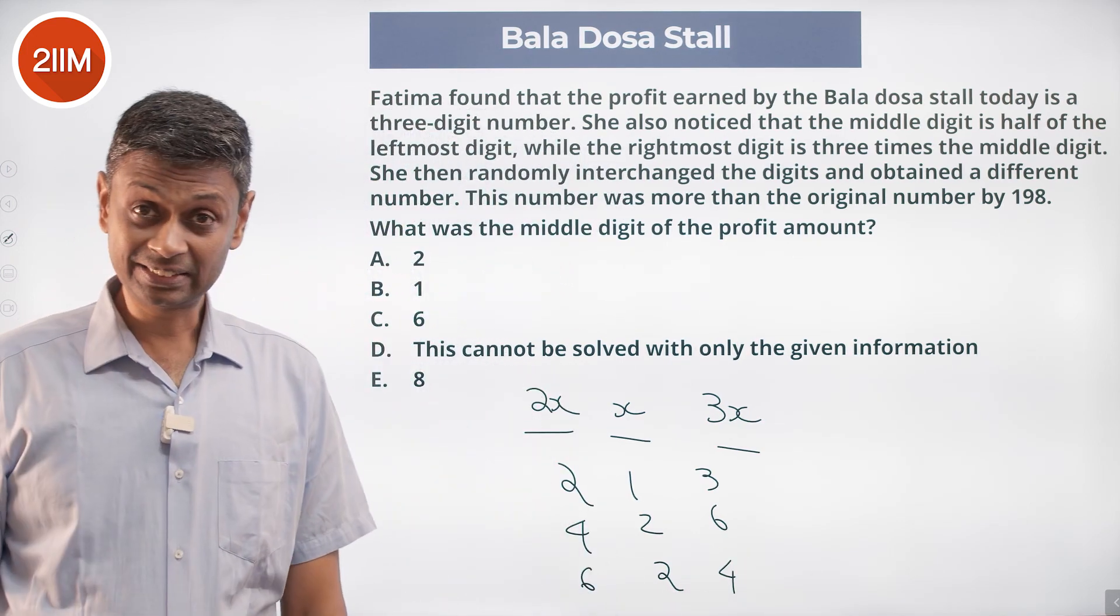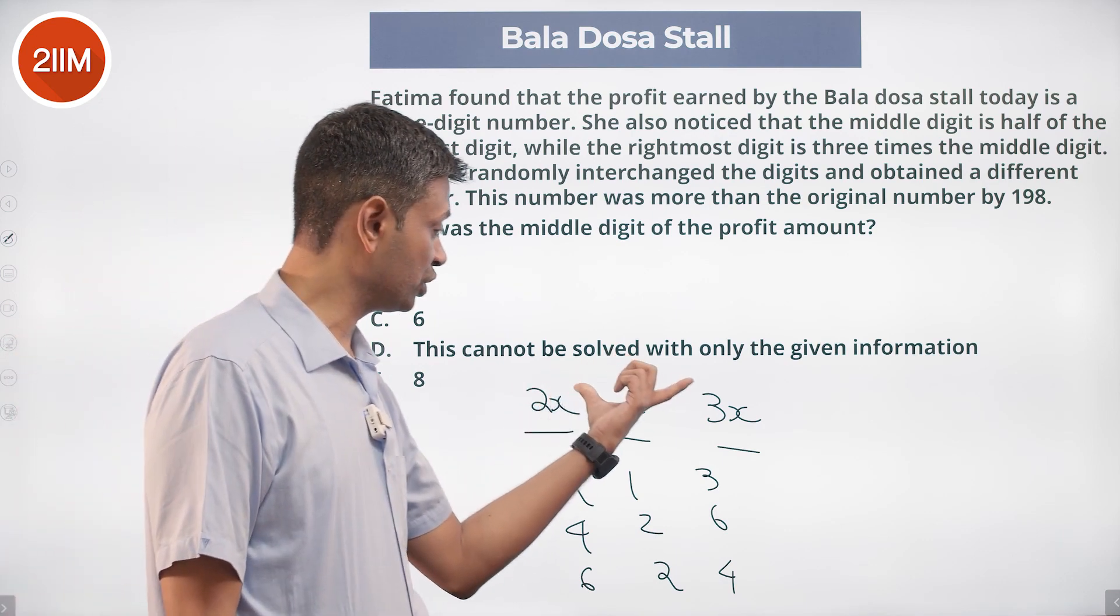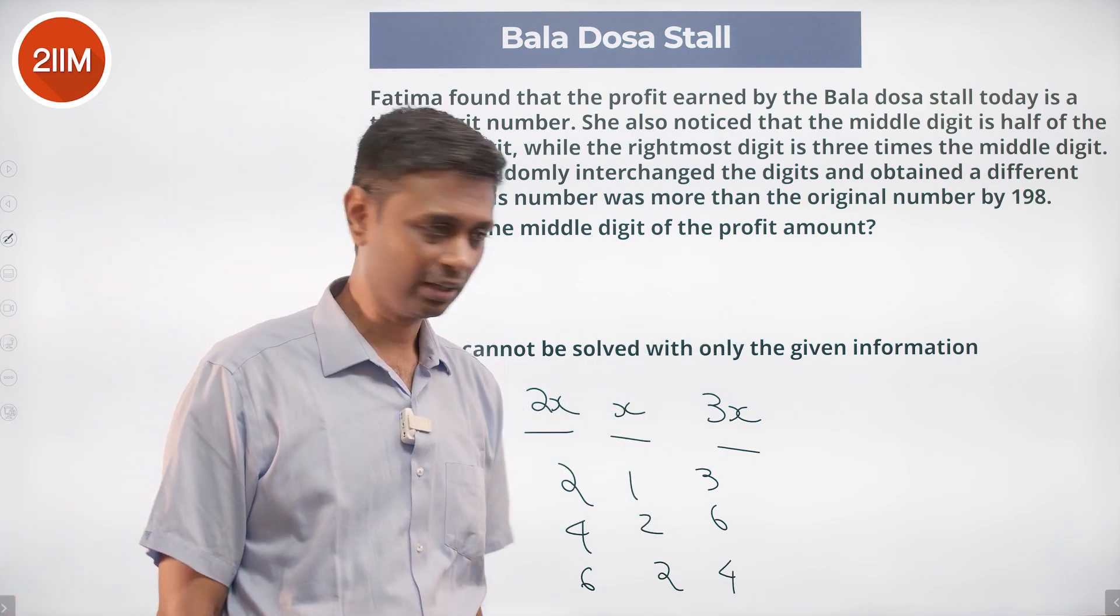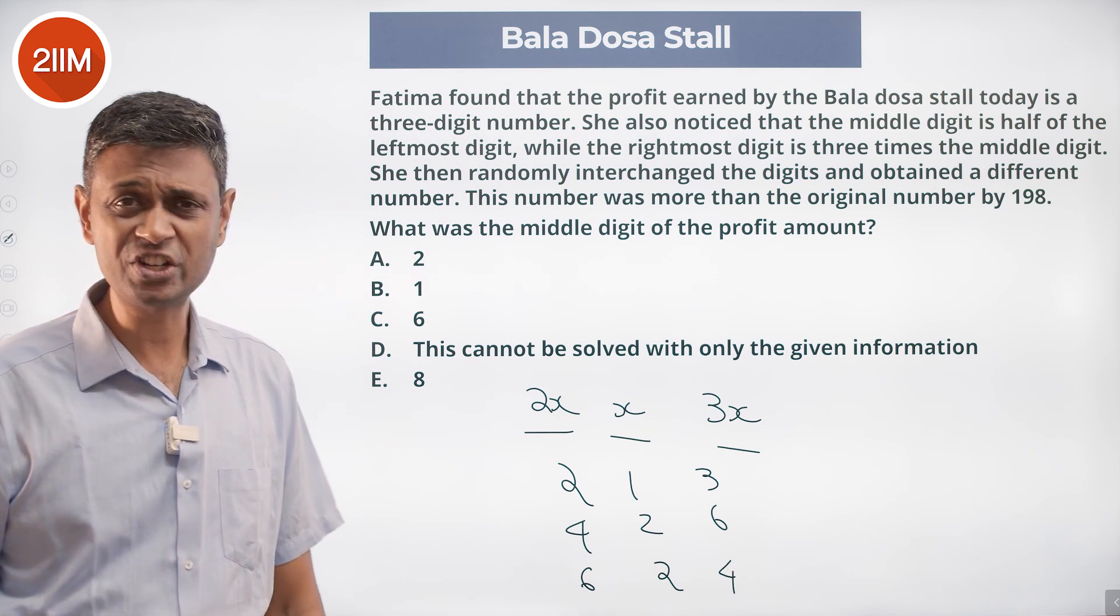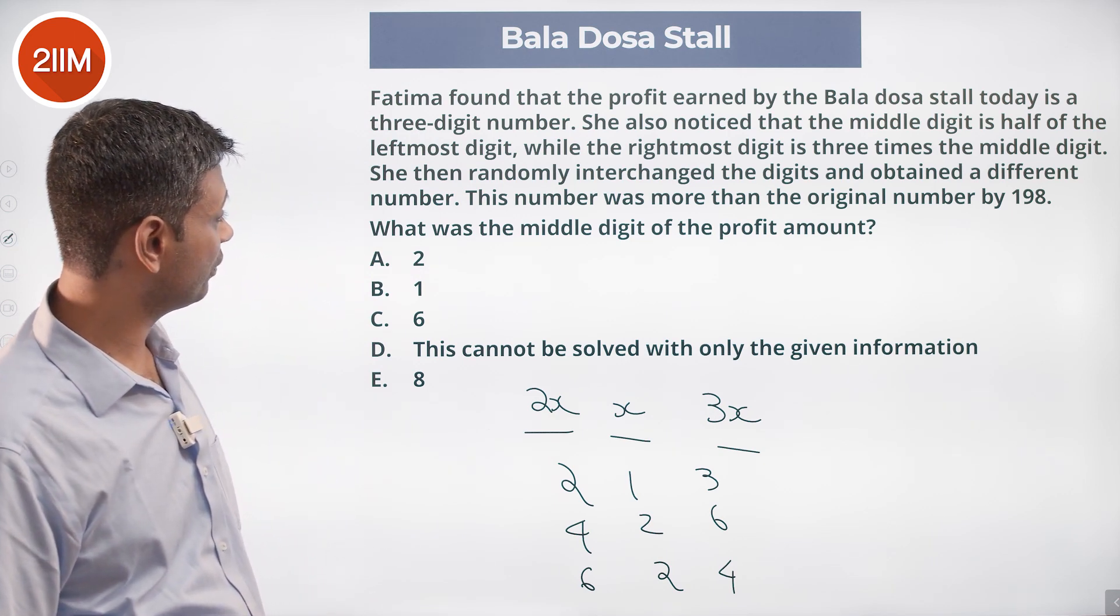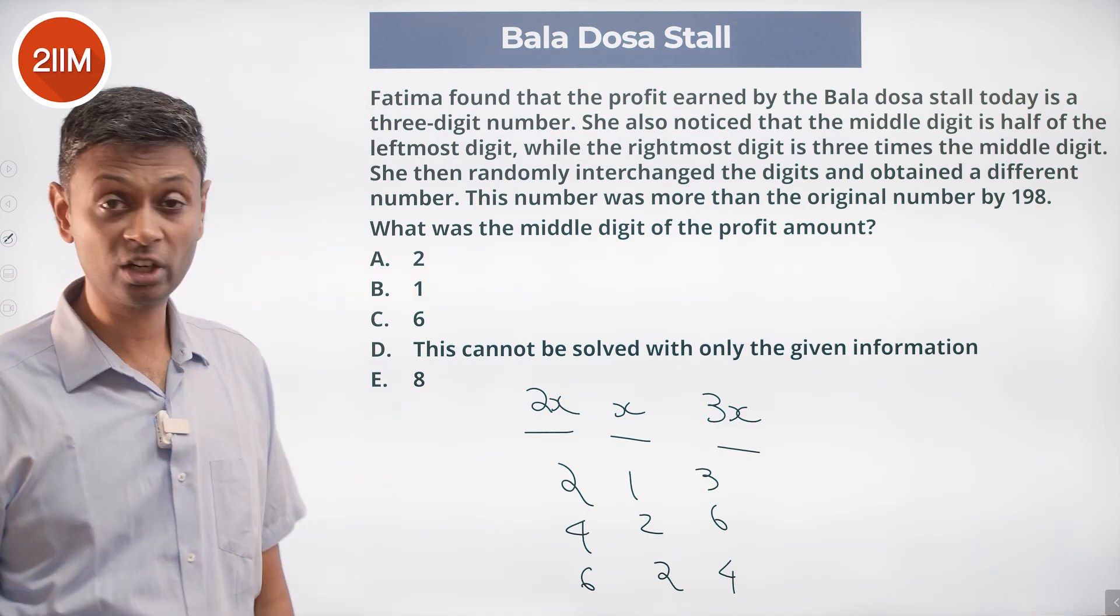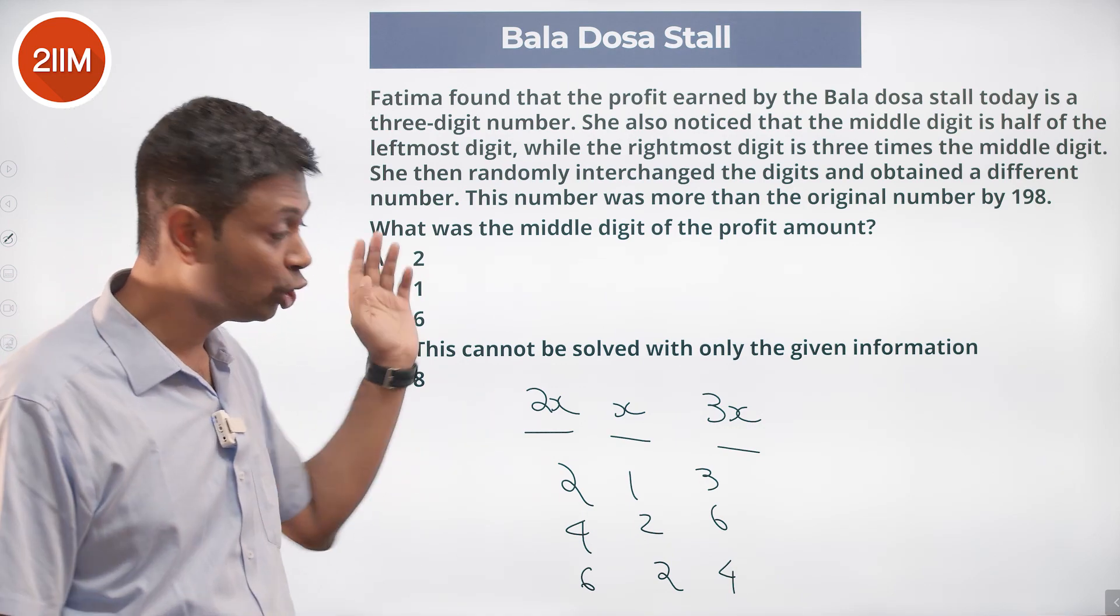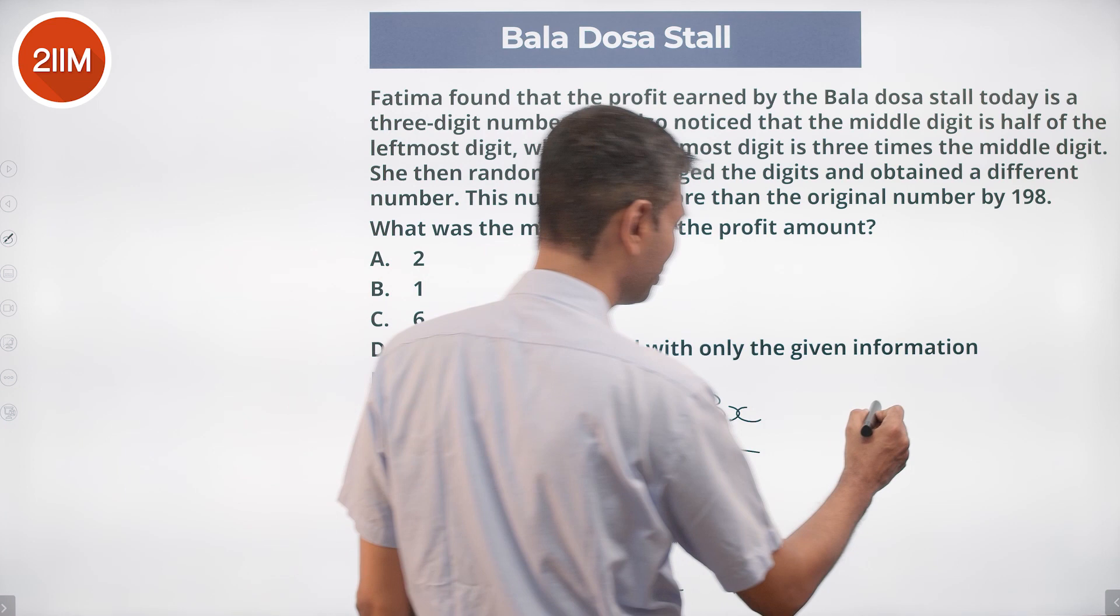198 is 99 into 2. If he interchanges these two digits, it will come there. We know she's interchanging these digits, and that much is clear. She obtained a different number. This number was more than the original number by 198. That means the new number should start with 3x.